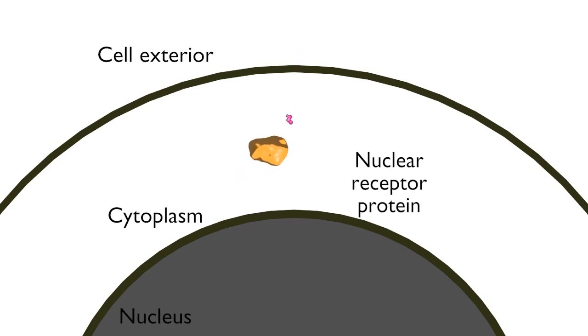Because of their hydrophobic nature, these hormones can pass through membranes into the cell where they bind directly to proteins known as nuclear receptor proteins.